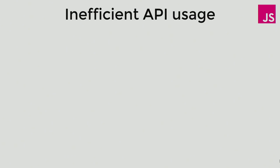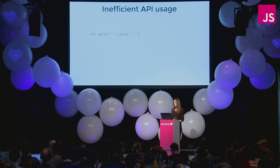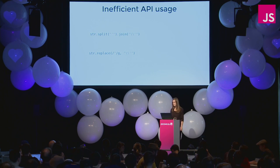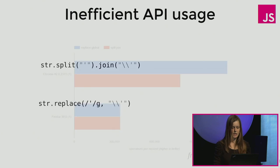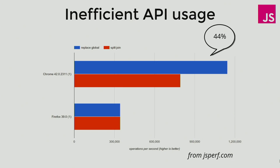The last example is about how JavaScript developers sometimes use the JavaScript API inefficiently. A couple of years ago, it was popular to use split and join calls for doing search and replace in JavaScript. But since the replace method is now very well optimized by many browsers, it's much more efficient to use the built-in replace method. Please keep this example in mind — I will come back to it later. On JSPerf, we could save 44% of execution time in Chrome for this particular optimization.